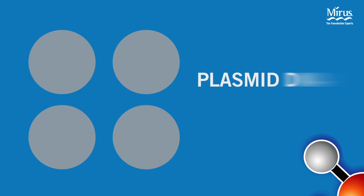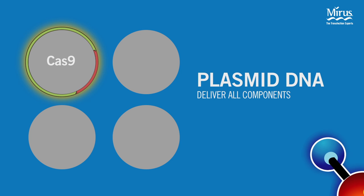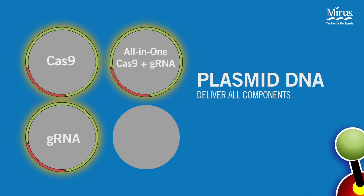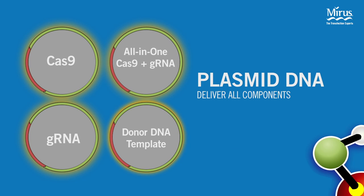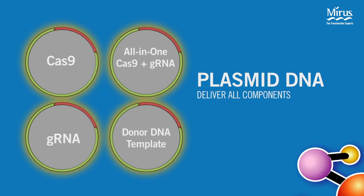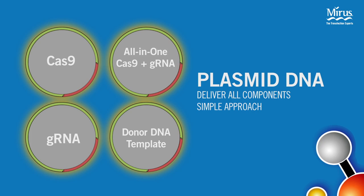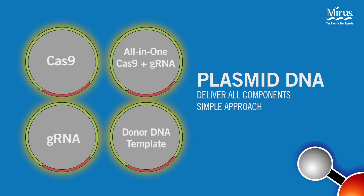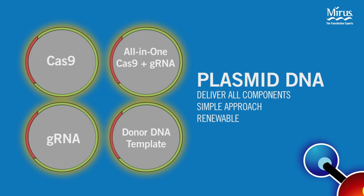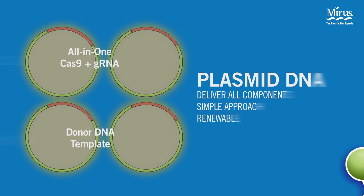All of the components required for CRISPR experiments can be supplied by plasmid DNA. This includes plasmids encoding Cas9 and guide RNA, as well as donor DNA for insertion. This straightforward approach offers the benefit that researchers can easily amplify the plasmids used in their experiments. Transfection of DNA is also commonly performed in most cell biology laboratories.